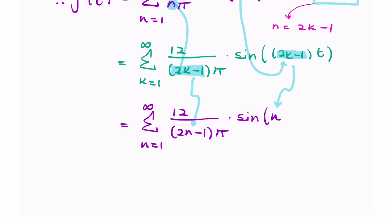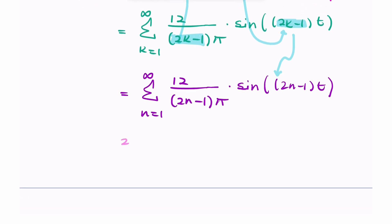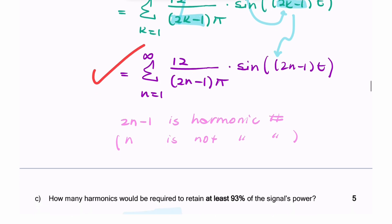I do that twice for the coefficient and for the angle of the harmonic. For the 2k minus 1 harmonic, the coefficient would be that. I can now rewrite that, replacing 2k minus 1 with n. That should be (2n minus 1)t. I'm just replacing k with n. Now, n is not the harmonic, and that's important to note. 2n minus 1 is the harmonic number. That's part B complete.